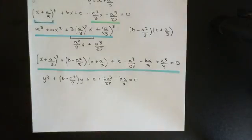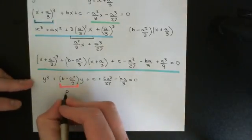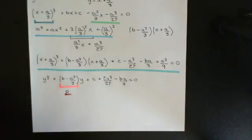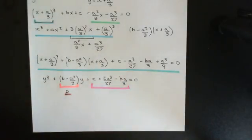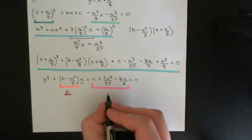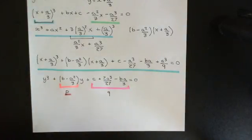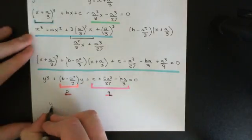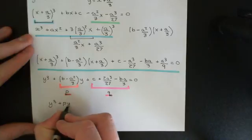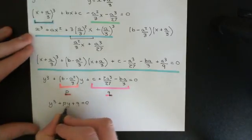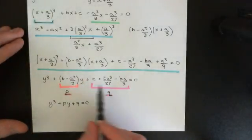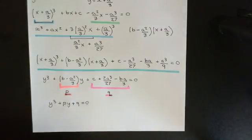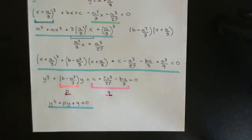Now all we have to acknowledge is that the term b minus a squared over three is just a constant — just some complex number — so we can call that constant p. And again, this mess c plus 2a cubed over twenty-seven minus ba over three is just a constant as well, so we can call that q. So basically what we have now got is this associated equation y cubed plus py plus q is equal to zero, where p and q are just complex numbers related to the original complex numbers of our original cubic in this complicated way.